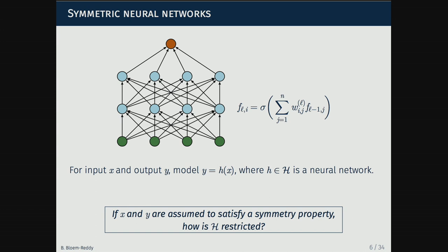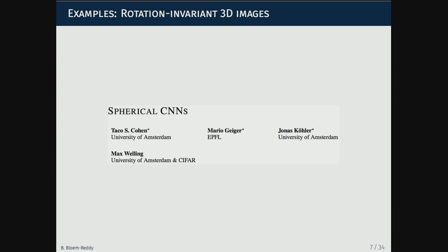Now if we want to understand what's going on theoretically: I say H belongs to some class of functions — a specific neural network architecture, say a feedforward neural network with fully connected layers, some number of hidden layers and nodes per layer. If I want my input and output to satisfy some symmetry property, how is my class of architectures restricted? This question has been asked and answered in specific cases in a bunch of settings.